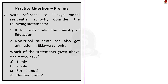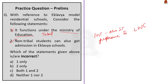Question 3: With reference to Eklavya model residential schools, consider the following statements. Statement 1: It functions under the Ministry of Education — this is wrong; it functions under the Ministry of Tribal Affairs. Statement 2: Non-tribal students can also get admission in Eklavya schools — this is correct. Apart from scheduled tribes, 10% of seats can be filled by non-ST candidates, with priority given to children of Eklavya school staff and children who have lost parents to left-wing extremism and insurgencies. The question asks for the incorrect statement — correct answer is option A: one only.